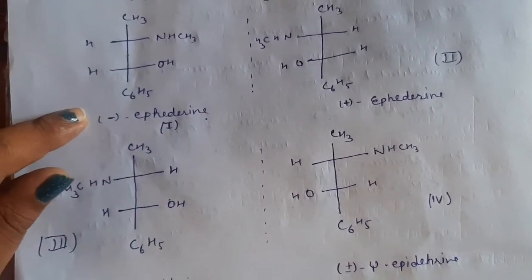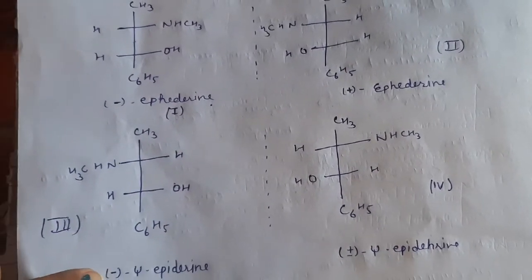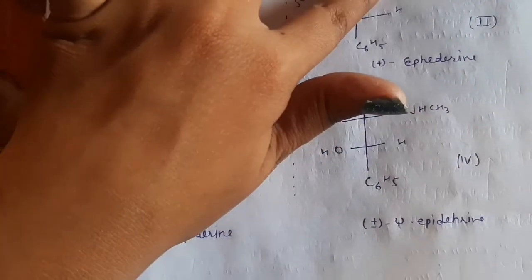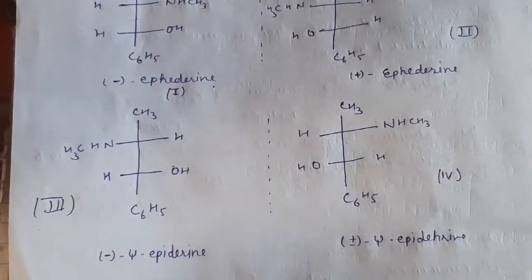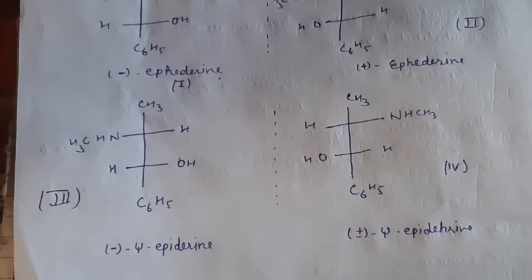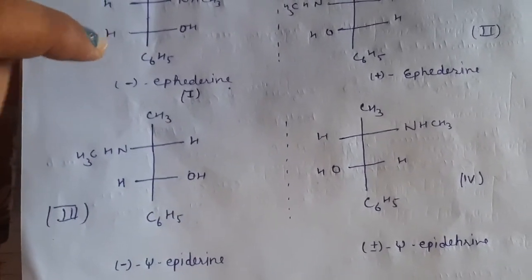Now if we see the melting point of ephedrine so it is generally 38 and this pseudo ephedrine is 118 degrees Celsius. So these two will have 38 and 118 degrees Celsius.